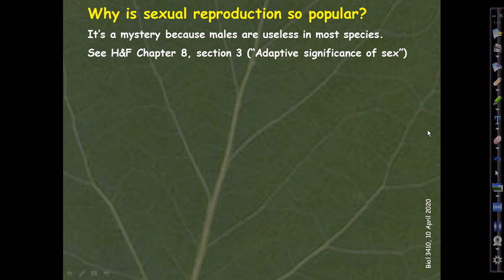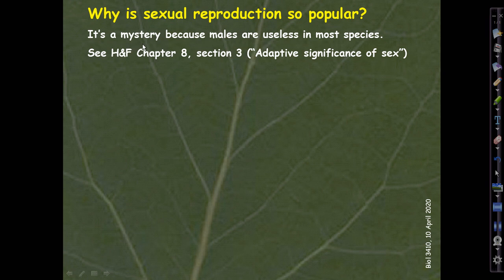Why is sexual reproduction so popular? It's actually a mystery, because males are useless in most species. Ours is atypical — we human males play female-like roles, assisting in the rearing of offspring. But in the vast majority of animals, males do no useful work and actually get in the way of female productivity. Similarly, in plants, male sex function does not contribute to the production of seeds or offspring.